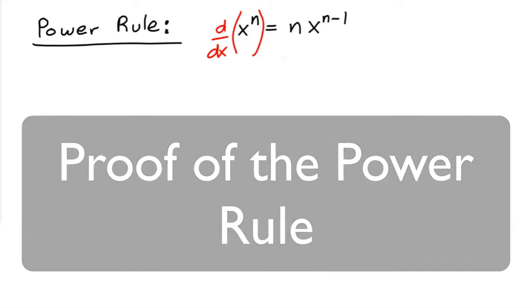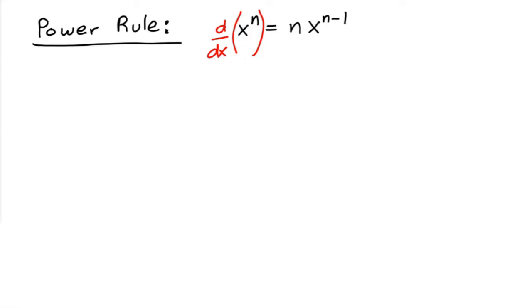Alright, so to prove the power rule we have to use the definition of the derivative. So let's start off with the derivative of x to the n. This is equal to the limit as h approaches zero of the following fraction: x plus h to the n minus x to the n, all over h.